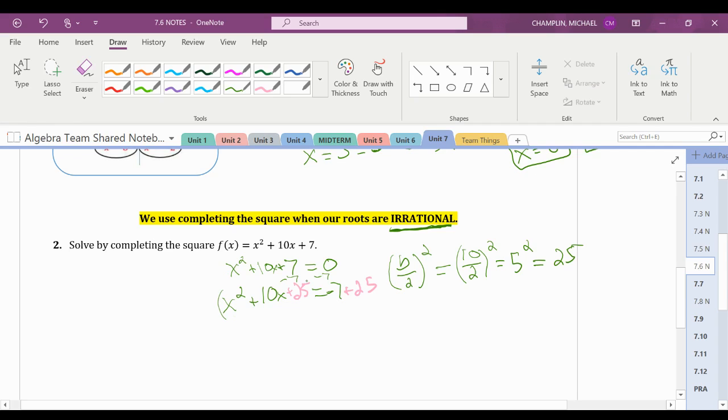So now we've found our perfect trinomial, which is x squared plus 10x plus 25, which converts to our perfect square, which is x plus 5 squared. And then we're going to combine terms on the right side, and we're going to get 18.